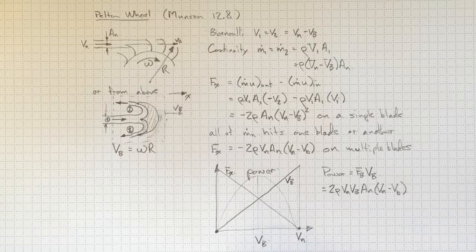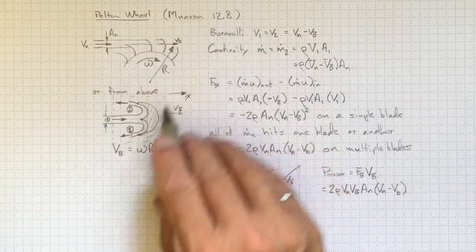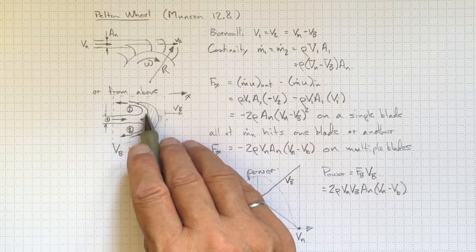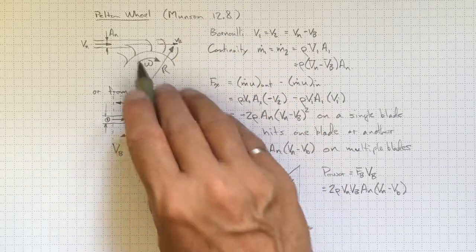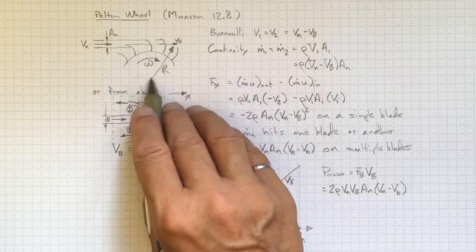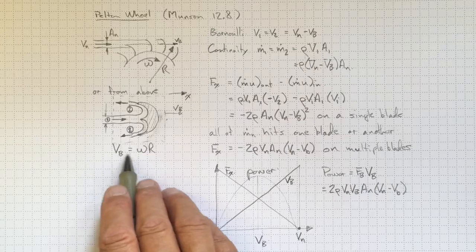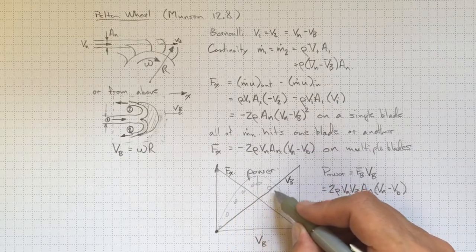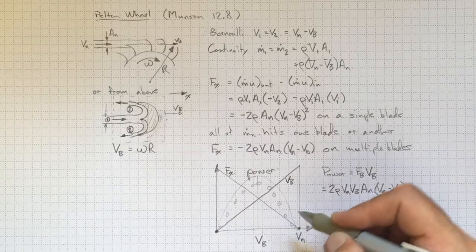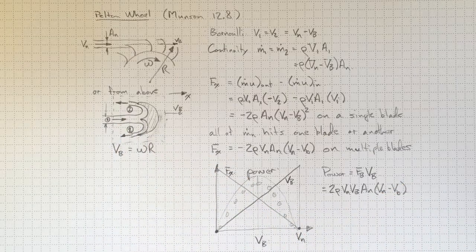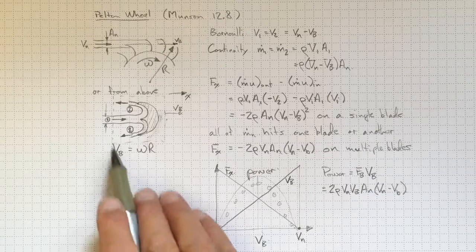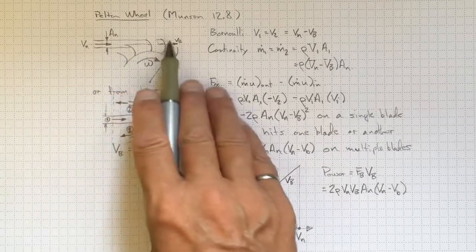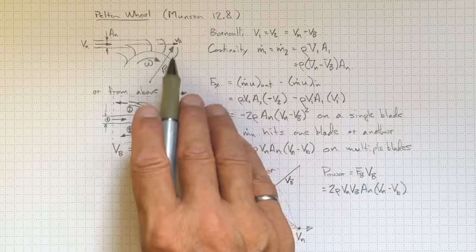This simple analysis ignores the fact that the blade angle isn't quite exactly 180 degrees, ignores friction, and ignores that the geometry is more complicated than v_b = omega r captures. However, the actual power output from a real Pelton wheel doesn't look terribly different, and we can get very close to the predicted performance from this simple analysis. Simple integral momentum analysis gives a good approximation of the forces, power, and behavior of systems where we're dramatically changing the velocity of a large stream of water.